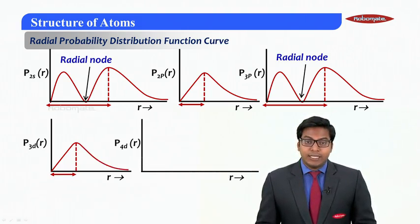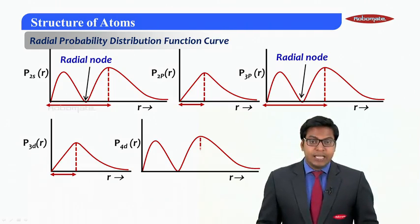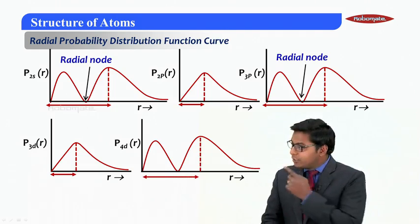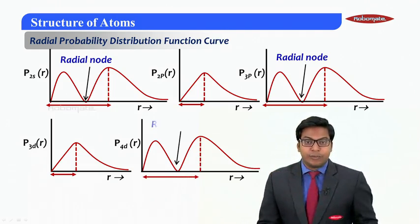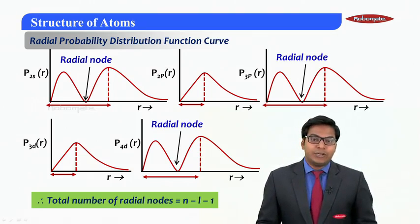Similarly if I draw it for 4d you would see the graph varies quite similar to 2s and 3p with one radial node. This gives us a pattern - here you would see there is one radial node forming. So this gives us a pattern that the total number of radial nodes will be equal to n minus l minus 1.